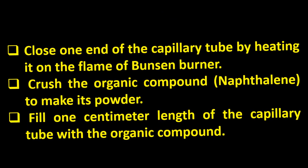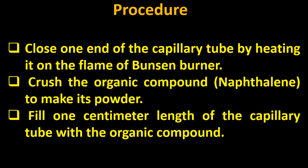Let us start the procedure. First of all, close one end of the capillary tube by heating it on the flame of a Bunsen burner. The capillary tube is a small glass tube just like a straw, but it is made up of glass. Secondly, crush the organic compound naphthalene to make its powder. Then fill one centimeter length of the capillary tube with the organic compound.